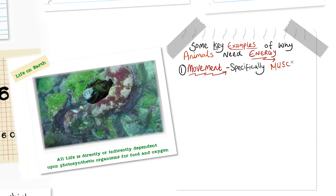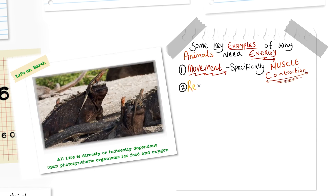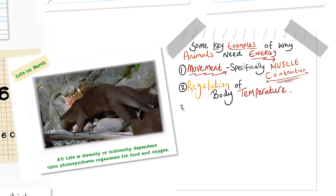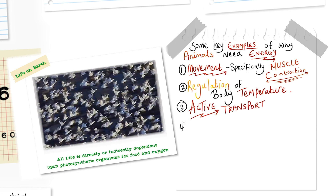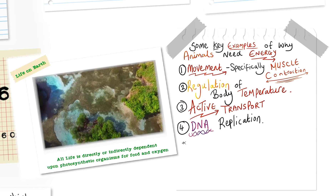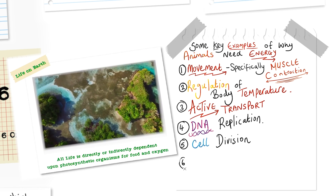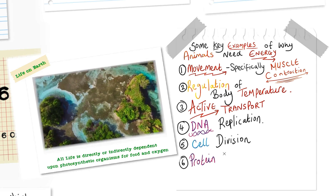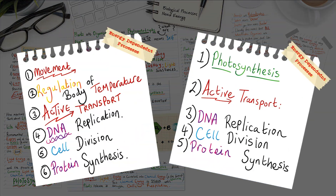Some key examples of why animals need energy. Number one: movement — specifically, you'll need to talk about muscle contraction. Number two: regulation of body temperature. Number three: active transport. Number four: DNA replication. Number five: cell division. And number six: protein synthesis. These are all good examples of why animals need energy.